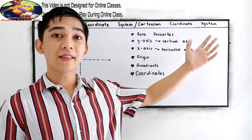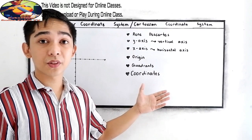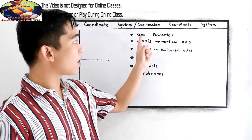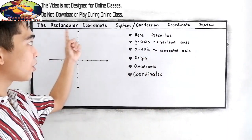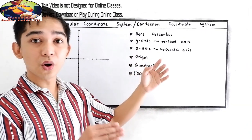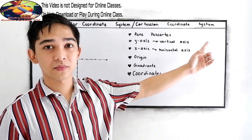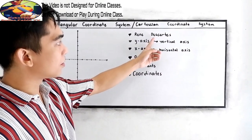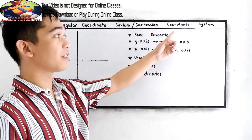You will encounter the different mathematical terms and proponents of the Rectangular Coordinate System. First, we have René Descartes. He is the proponent of the Rectangular Coordinate System. That's why it's also known as the Cartesian Coordinate System — it came from his name, Descartes.